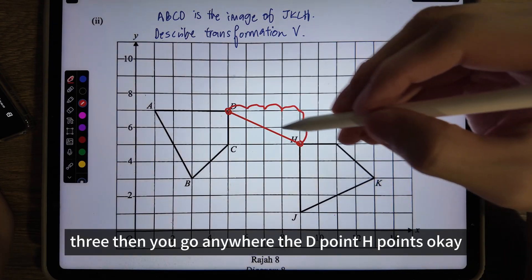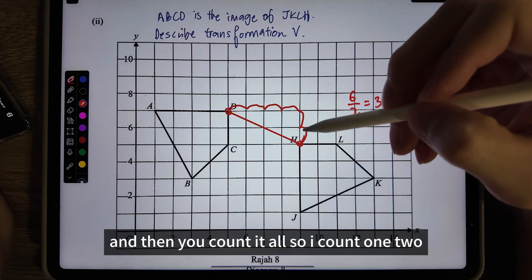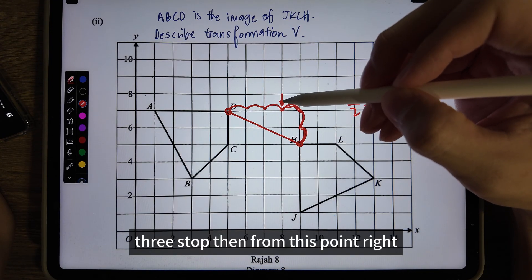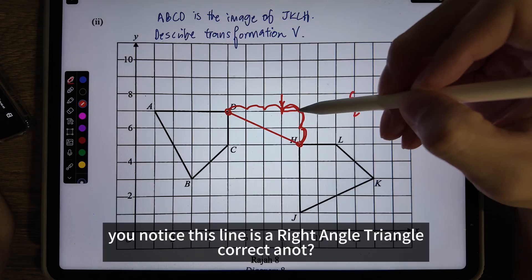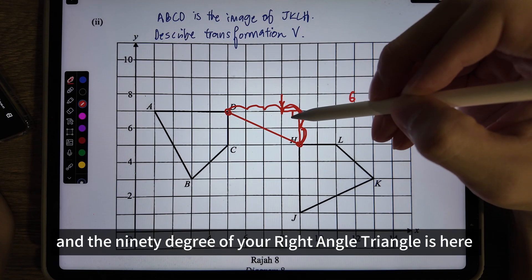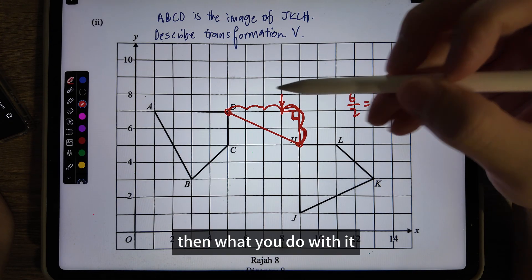Six divided by two equals three. Then you take D point, H point, and count. So I count one, two, three, stop. From this point, you notice this line is a right angle triangle, correct? And the 90 degrees of your right angle triangle is here. Then what you do with it?